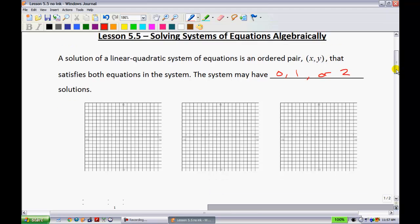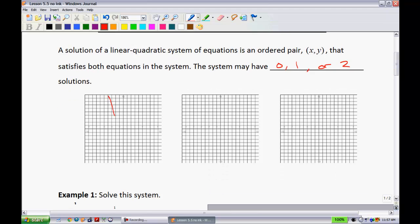One opportunity that we can have is we can have a quadratic like so, and a line like so, that never meet one another. When that happens, we would say that we have zero solutions.